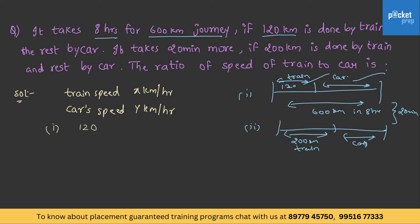For the first scenario, it is 120 by x plus 480 by y is equal to 8. That is, 120 kilometers by train and 480 kilometers by car in 8 hours.